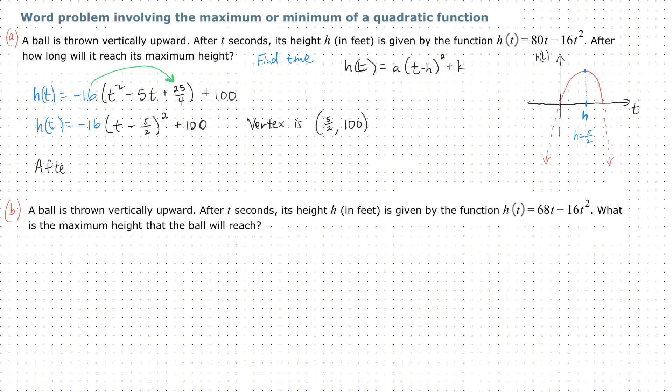Make sure you put the units though. Let's answer this in a complete sentence: After 2.5 seconds, the ball reaches its maximum height. Now, it turns out the maximum height is 100 feet, but it doesn't say we need to mention that, so we just need to mention the 2.5 seconds. Make sure you can show your work and the process of completing the square.